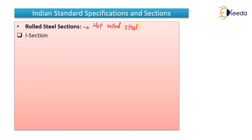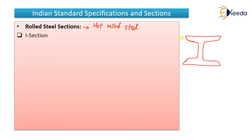The first type of section is the I-section. When you draw it, remember that the corners will be curved, not very sharp — they will have curved edges. If you want to find out the area or moment of inertia, there are various properties: moment of inertia about the XX axis, moment of inertia about the YY axis, total cross-sectional area, and radius of gyration Rxx and Ryy.